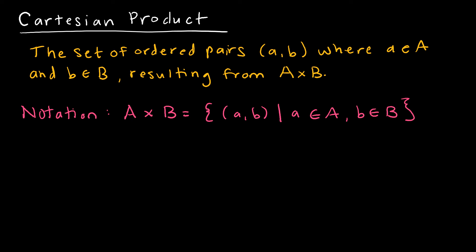So I bring up ordered tuples because of the Cartesian product, which we will talk much more about when we talk about relations further along in this course. But it's essentially the set of ordered pairs, where each element A belongs to the set A, and each element B belongs to the set B, resulting from A times B. So let's say set A is 0 and 1, and set B is 2, 3, 4.